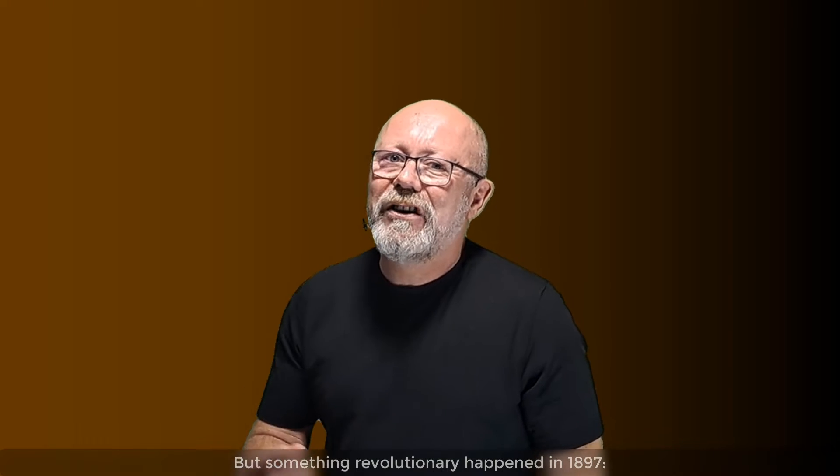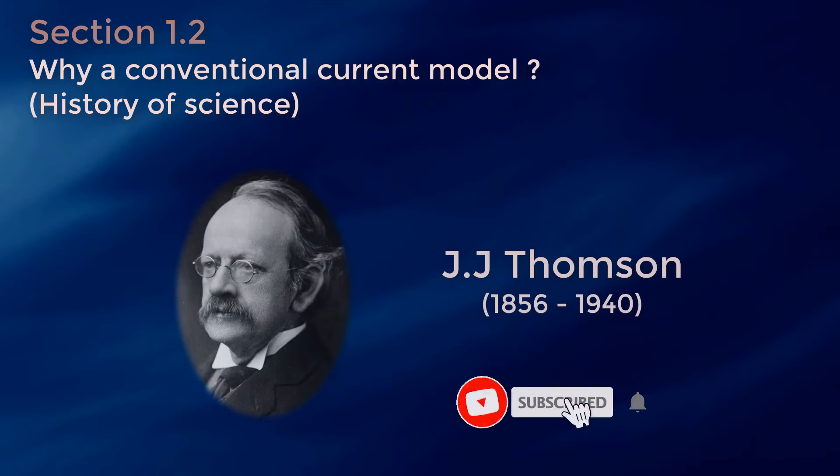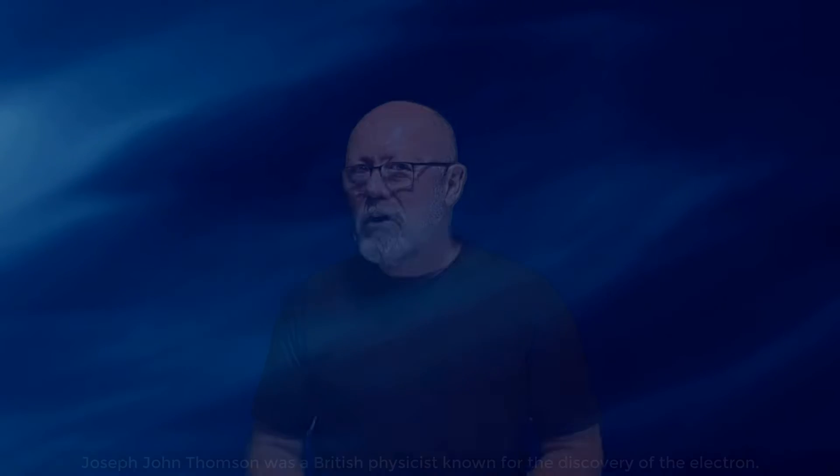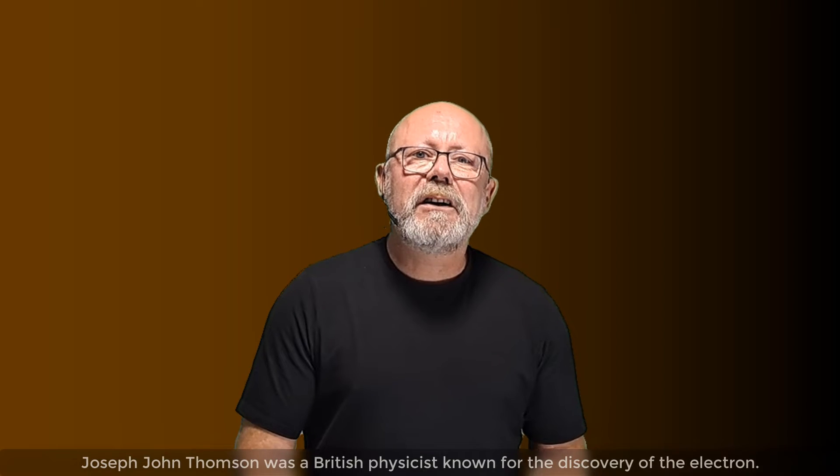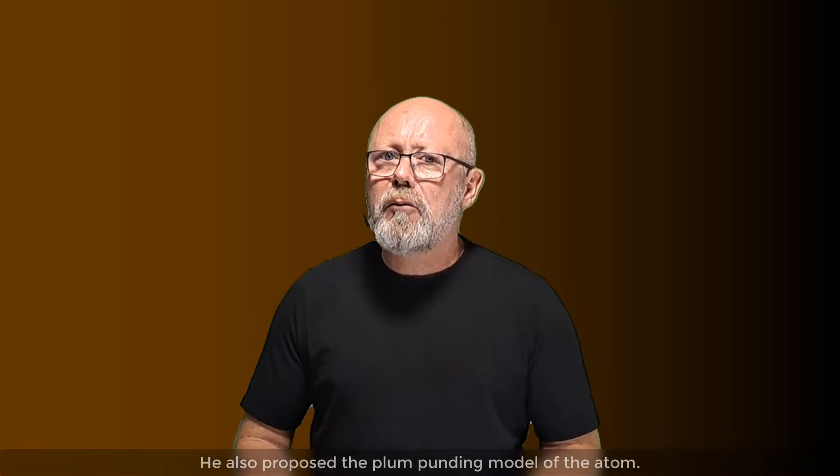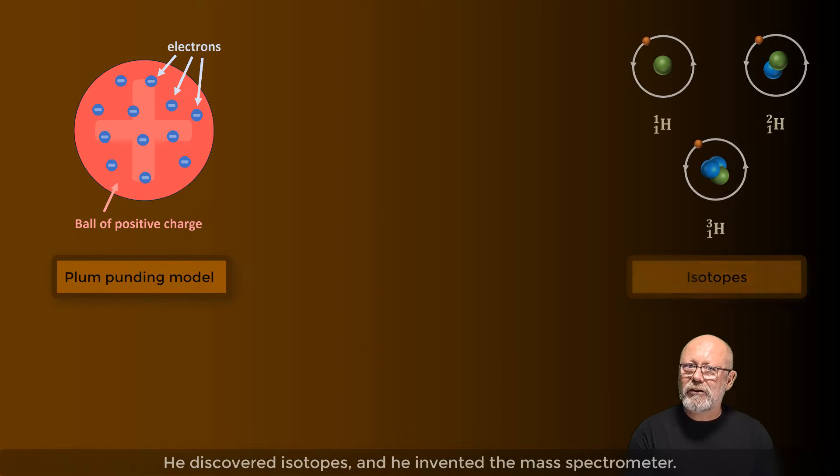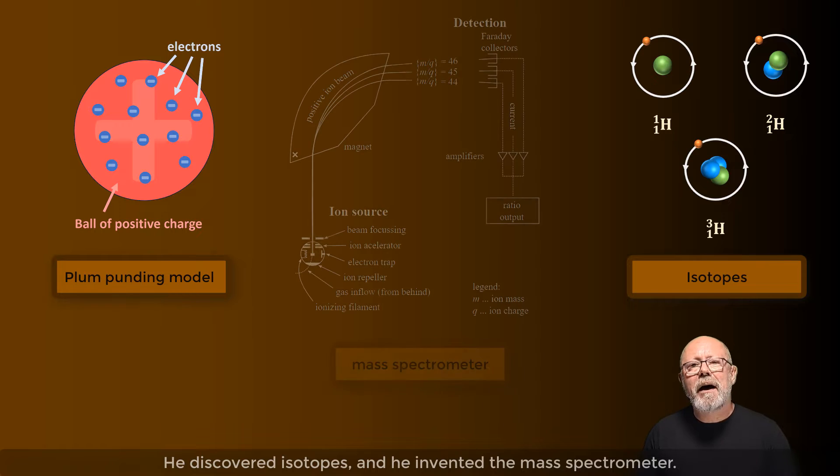All further developments in electrical sciences until the late 19th century used this model. But something revolutionary happened in 1897. Thomson's cathodic ray tube experiment. Joseph John Thomson was a British physicist known for the discovery of the electron. He also proposed the plum pudding model of the atom. He discovered isotopes and he invented the mass spectrometer.